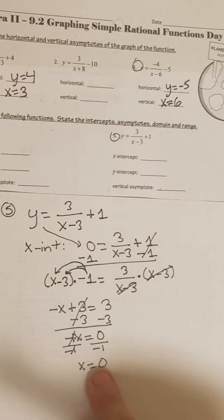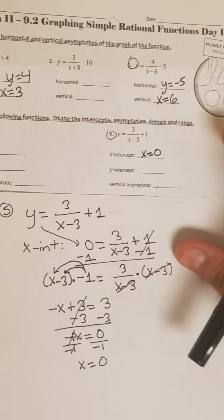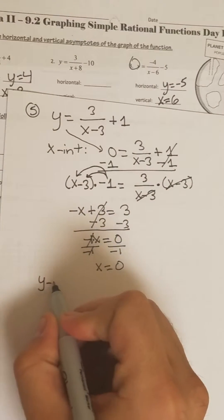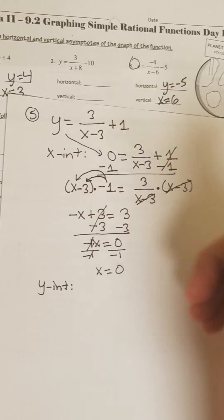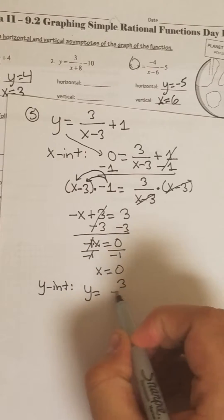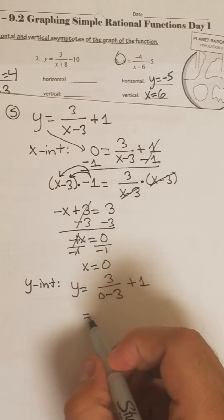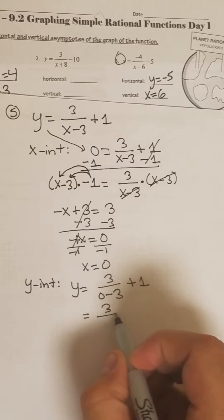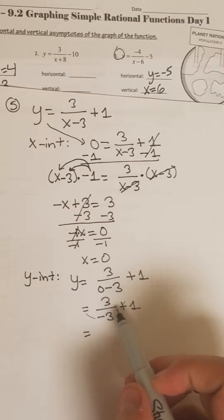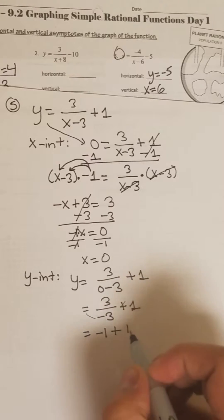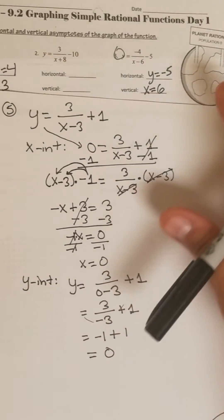Usually if the x-intercept is 0 that means the y-intercept is also 0, but we are going to verify that. So y-intercept is when x is 0 — you're going to replace x with 0 everywhere you see it in the original. So we've got y equals 3 over 0 minus 3 plus 1. So 0 minus 3 is negative 3, so we've got 3 divided by negative 3 plus 1. That's negative 1 plus 1, which is going to be 0. So our y-intercept is 0, which is exactly what we were saying.